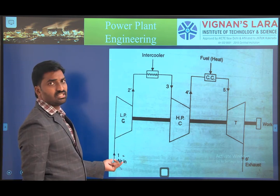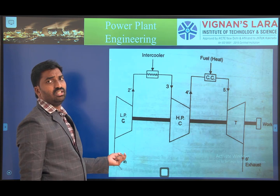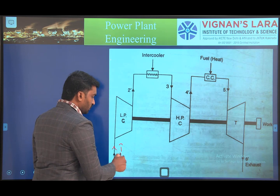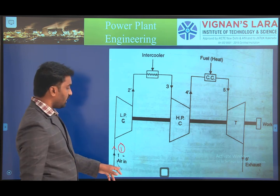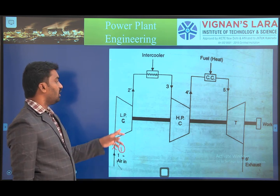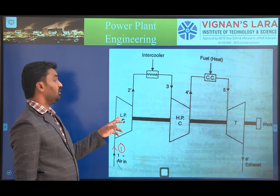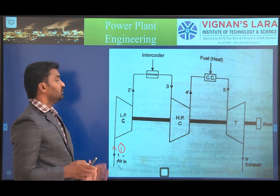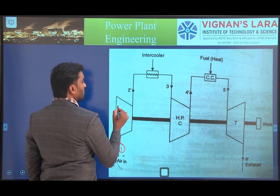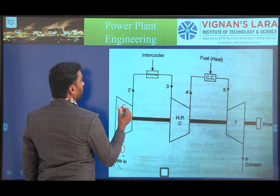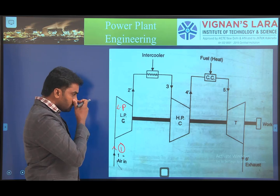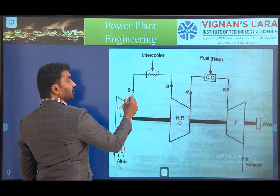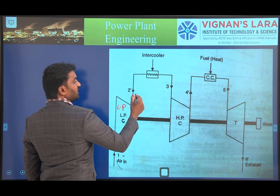Initially, ambient air is taken from the atmosphere — this is thermodynamic state 1 — and entered into the low pressure compressor, where it is compressed at a lower pressure level. After the compression process, pressure is increased, giving state 2. After that, we use the intercooler.